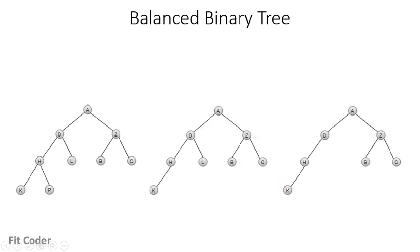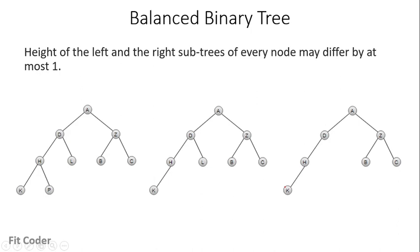The next type is balanced binary tree. In a balanced binary tree, the height of the left and right subtrees of every node may differ by at most one. In the first tree, all leaf nodes have a height difference of zero. For node H, the left subtree has a height of one and the right subtree also has a height of one, so the difference is zero. For node D, the left subtree has a height of two and the right subtree has a height of one, so the difference is one.